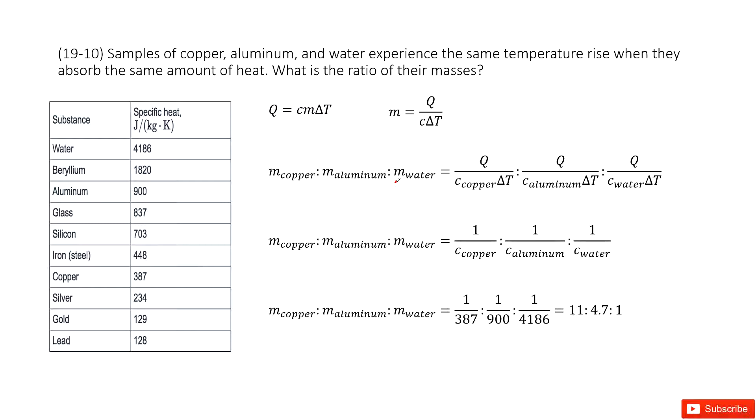So we can see we have samples of copper, aluminum, and water. And then we find when they absorb the same amount of heat, the temperature rise is the same. Now we need to find the ratio of the masses.